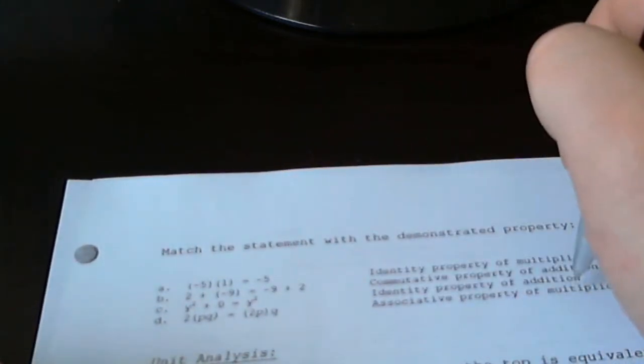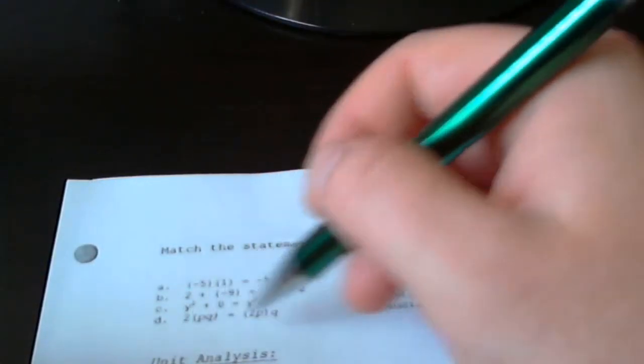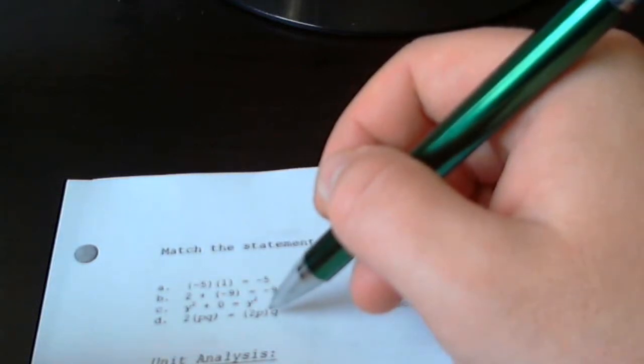And finally, the associative property - how we associate different numbers. So 2 times p times q is the same thing as 2p times q.